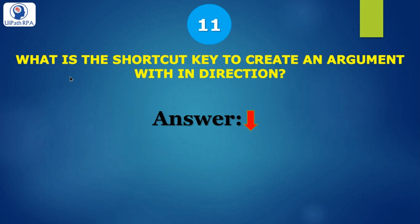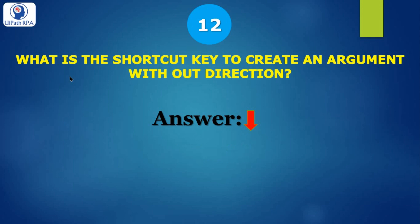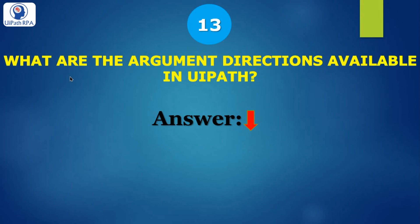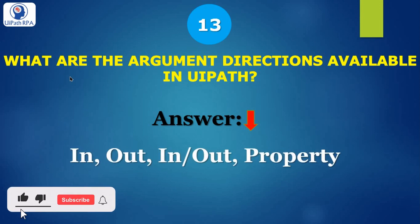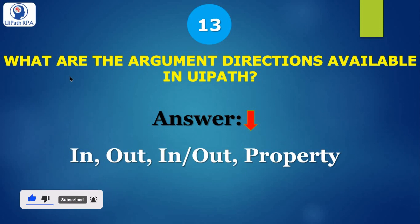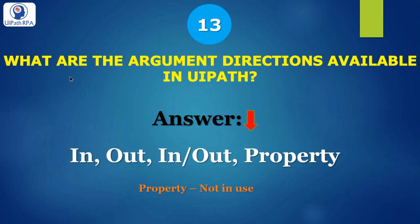What is the shortcut key to create an argument with In direction? That is Control+Shift+M. What is the shortcut key to create an argument with Out direction? That is also Control+Shift+M. What are the argument directions available in UiPath? There are four argument directions: In, Out, In/Out, and Property. But Property is not in use these days.